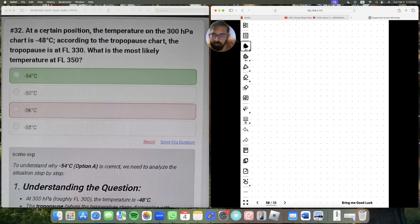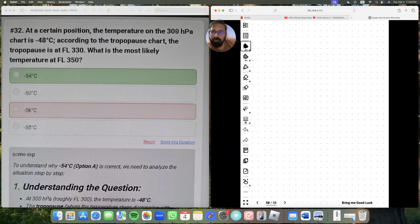This was a question asked by a student. At a certain position, the temperature on the 300 hectopascal chart is minus 48. If you have attended my met class, you already know that 300 hectopascals happens at 30,000 feet. At 30,000 feet, the temperature is minus 48 degrees centigrade. So this is 30,000 feet.